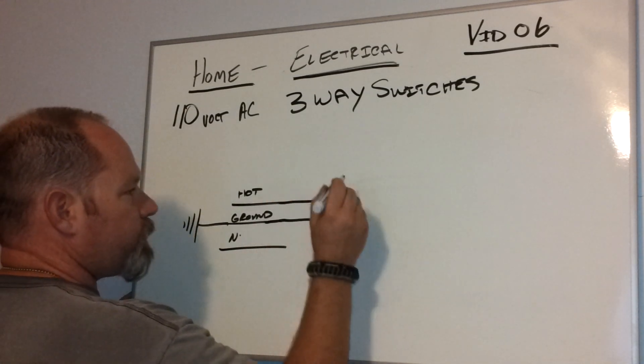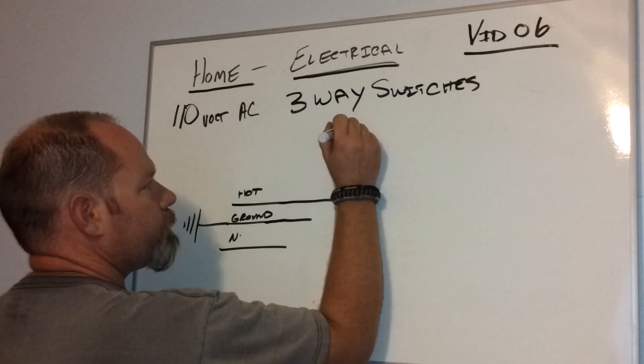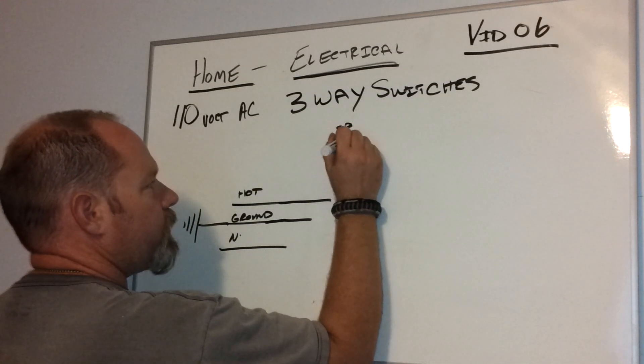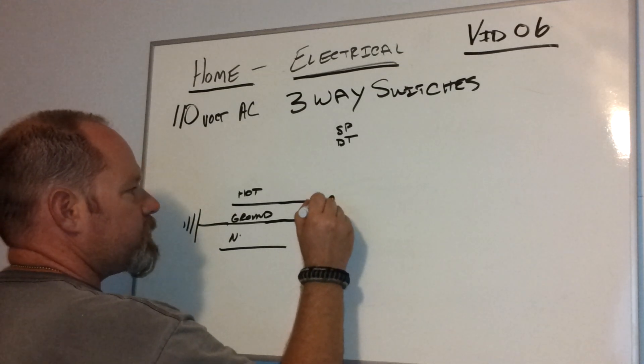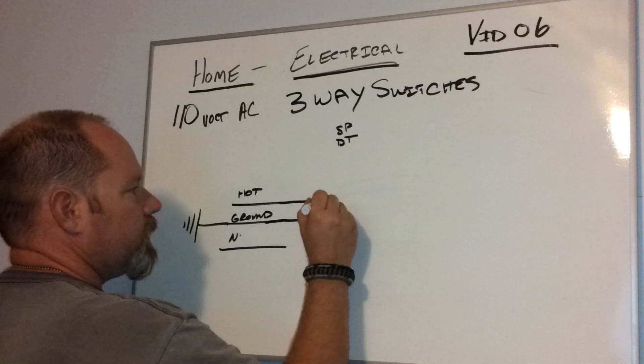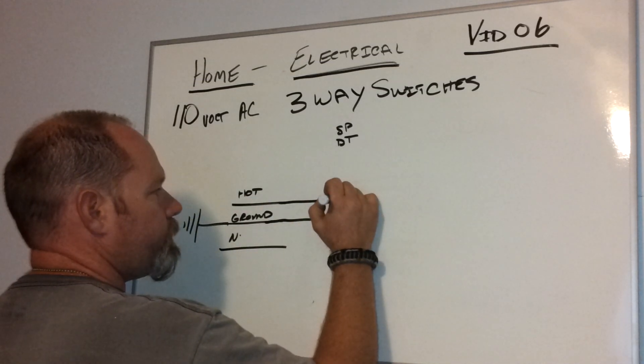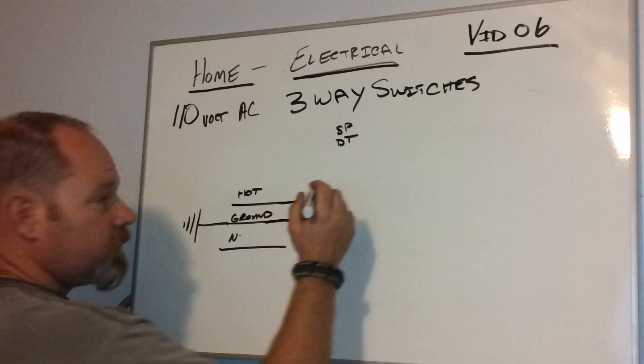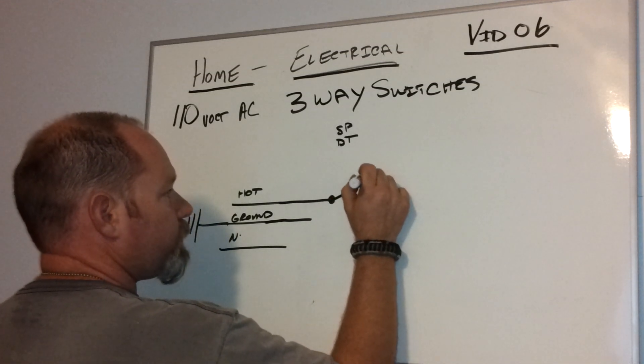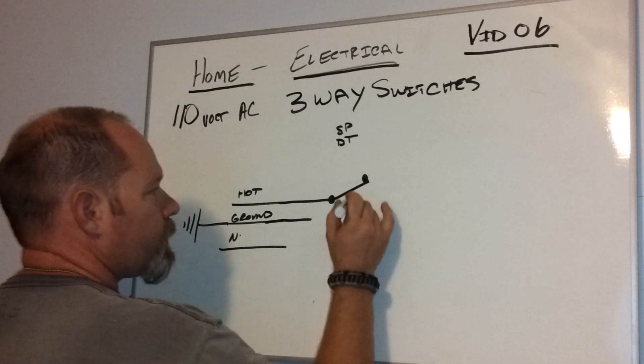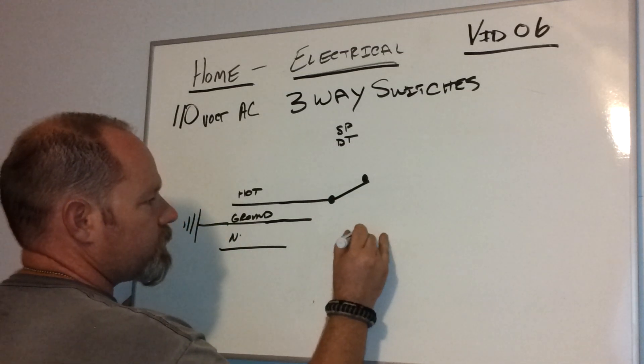Your three-way switch is a single pole double throw. And that basically means this. Here is your single pole, your hot comes into the switch, and it will double throw. Now you can throw it up to the switch, or it can go to the other switch.